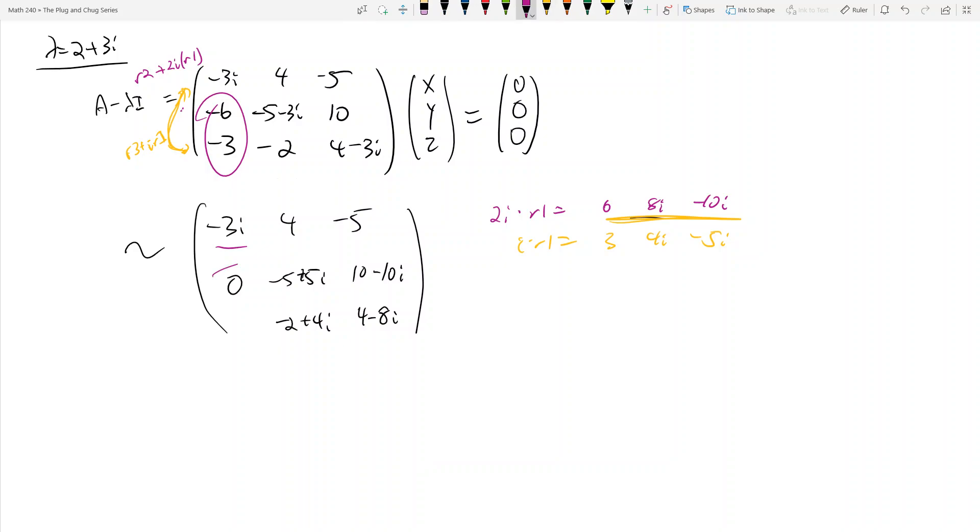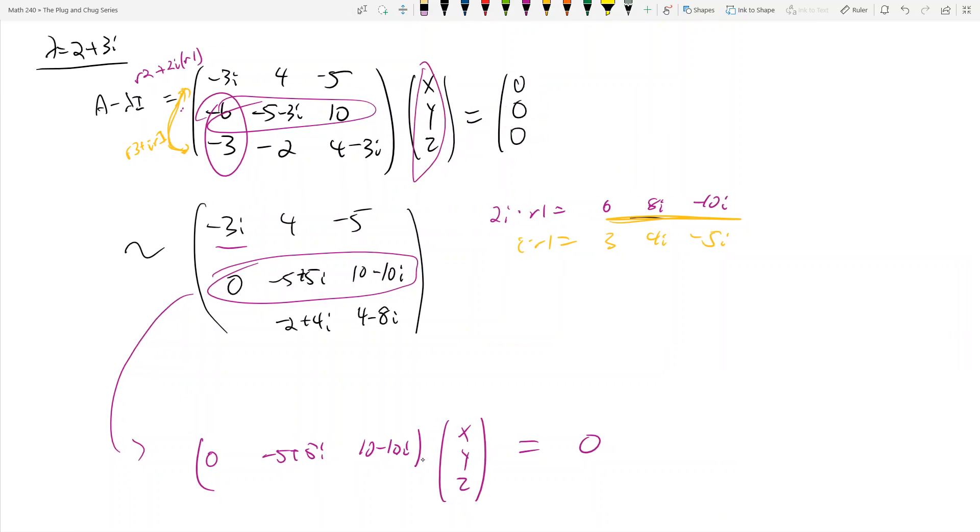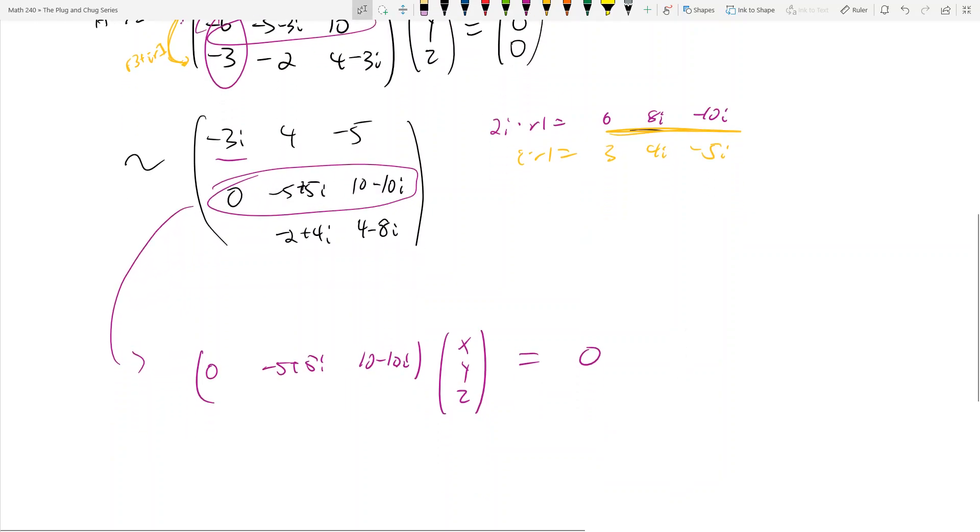I'm going to take the second row: 0, -5+5i, 10-10i. I have to multiply this by (x, y, z) to get the value 0. Right off the bat now, I can just ignore what x is and try to guess what y and z have to be.